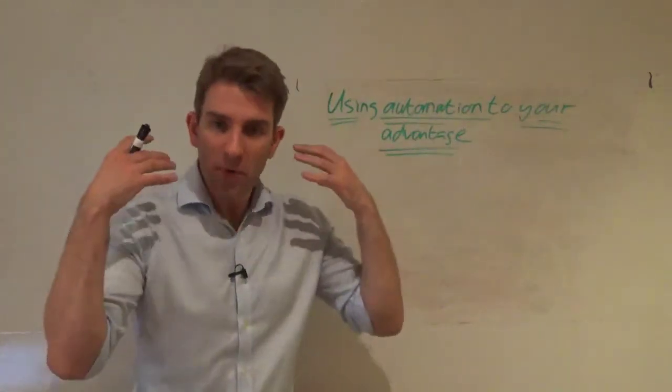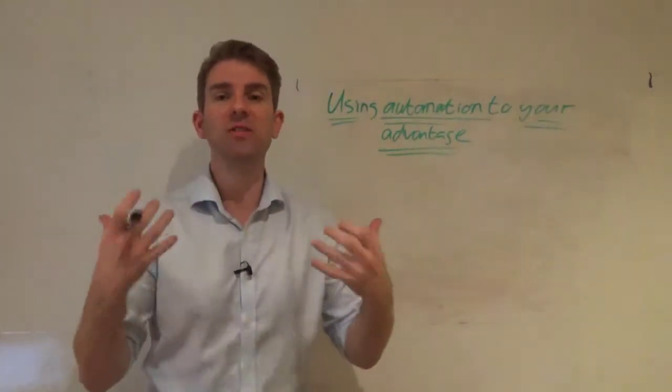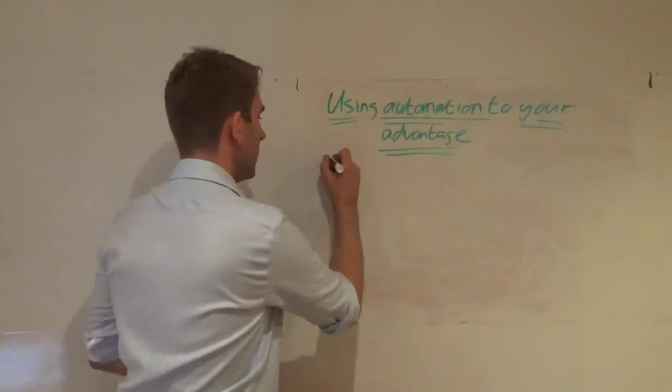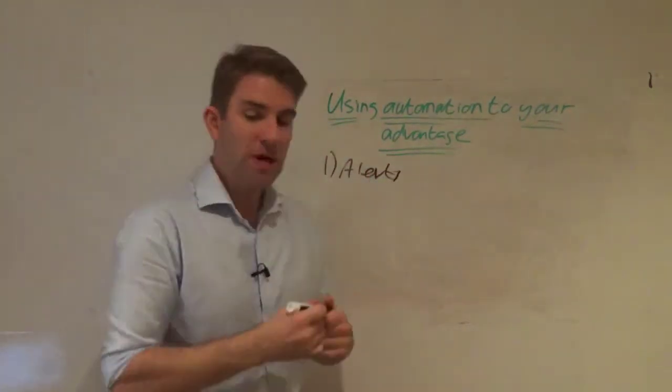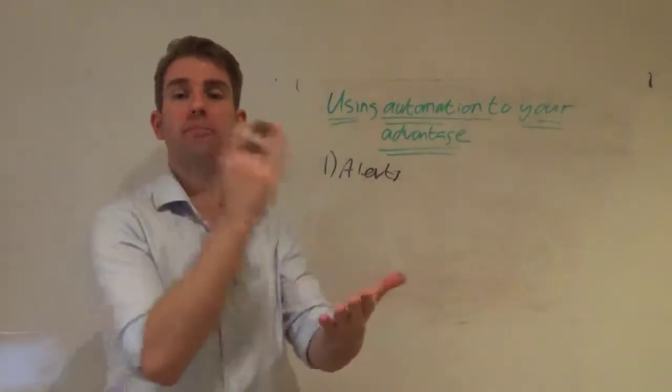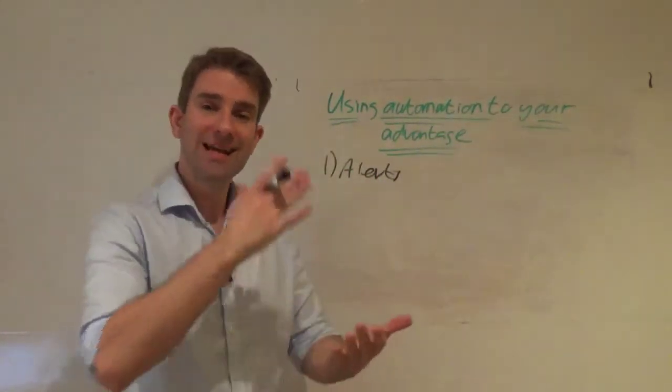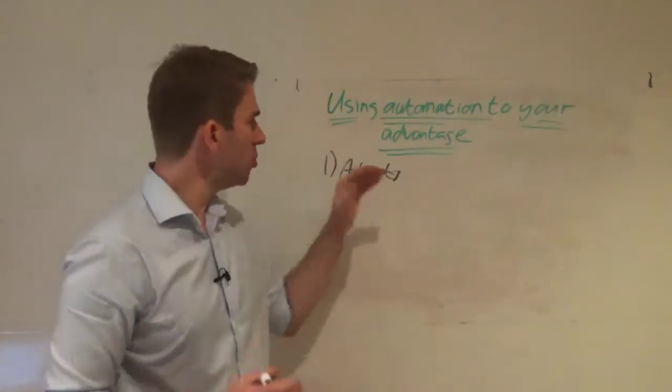How do we utilize them for best effect? The first one is exactly what I said - it's alerts. We don't need to be sitting in front of the screen. If we have a price level we want to get involved in, set an alert. We can use this automatic alert that says hey, the price is getting close.